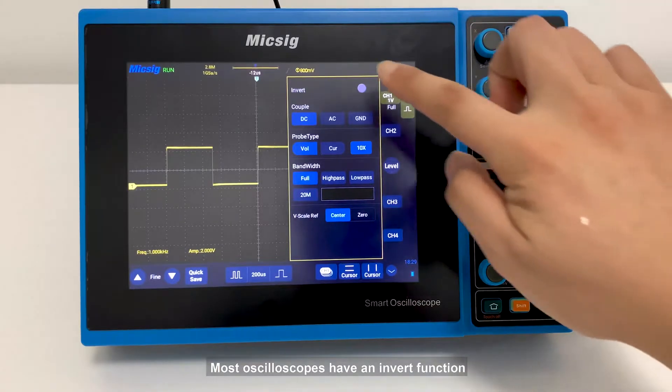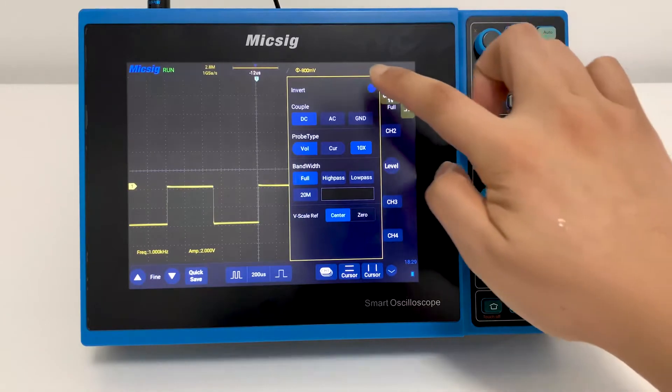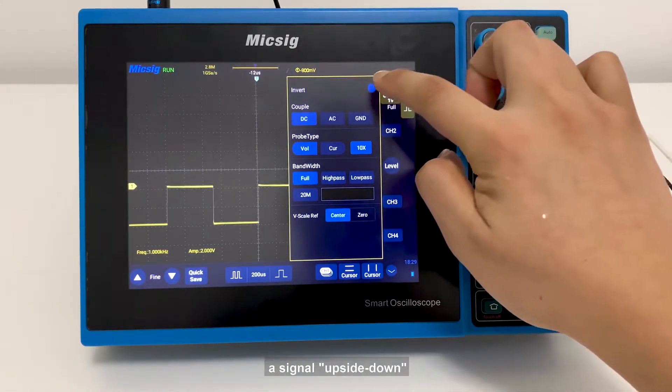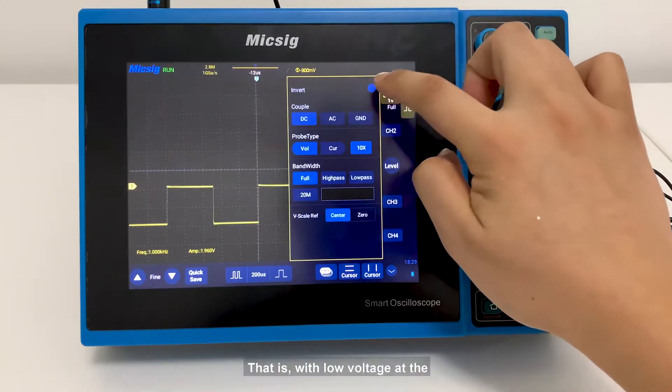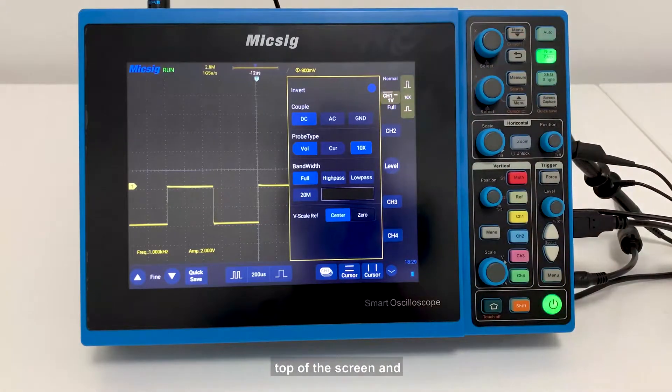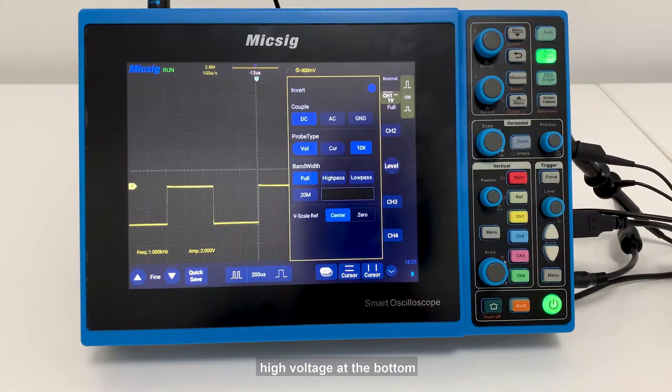Most oscilloscopes have an invert function that allows you to display a signal upside down, that is, with low voltage at the top of the screen and high voltage at the bottom.